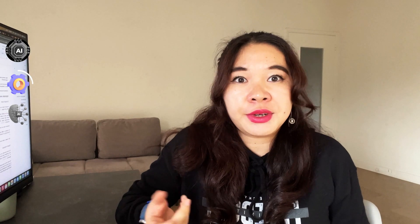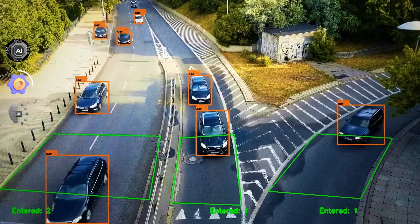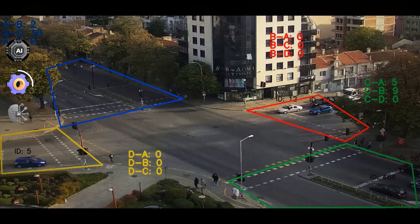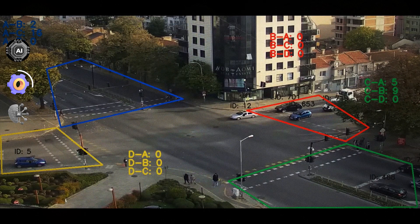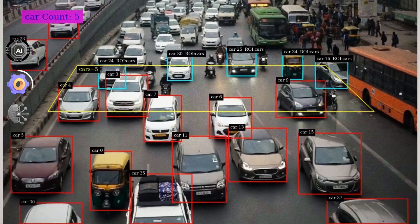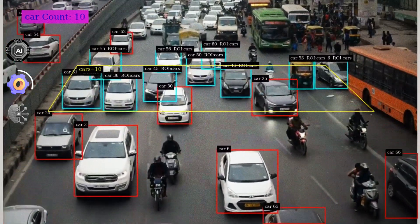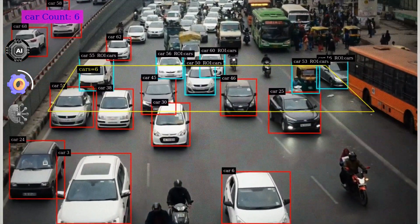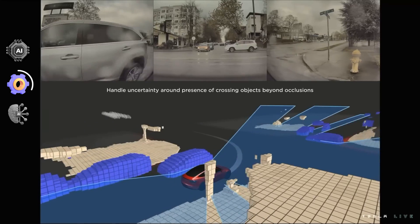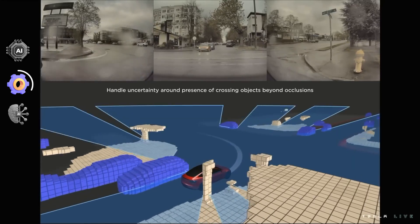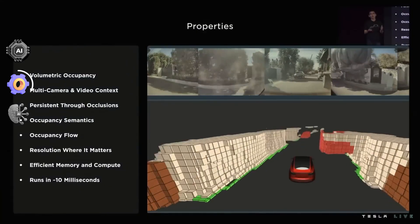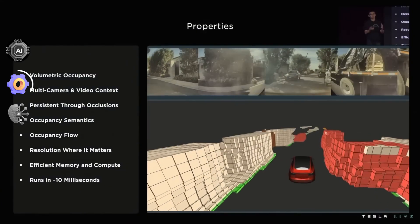Computer Vision isn't limited to iPhones — it has a profound impact in various fields. For instance, in traffic systems, it can identify cars and objects, optimizing traffic flow and safety. It's like giving our machines a set of smart eyes to navigate and understand our world.